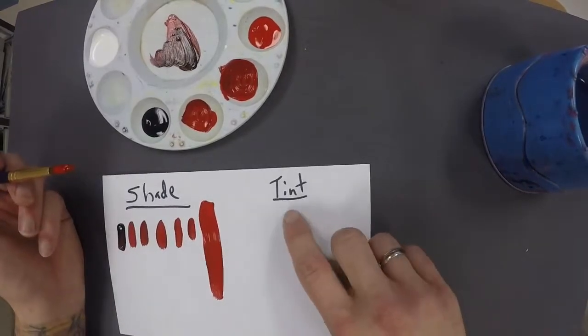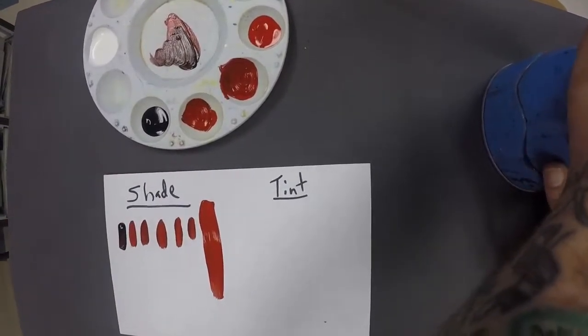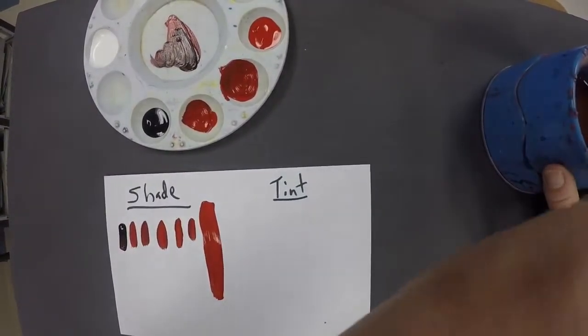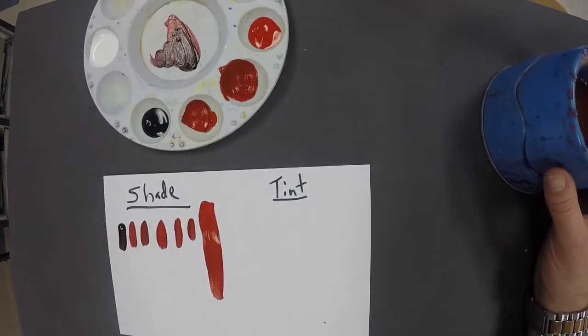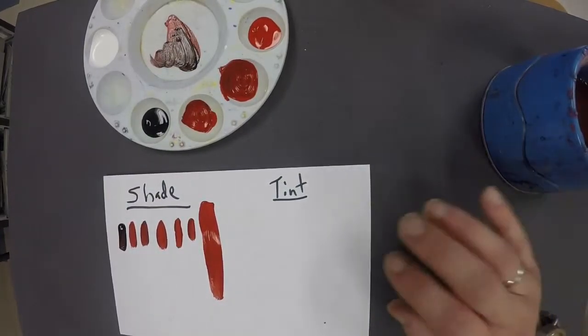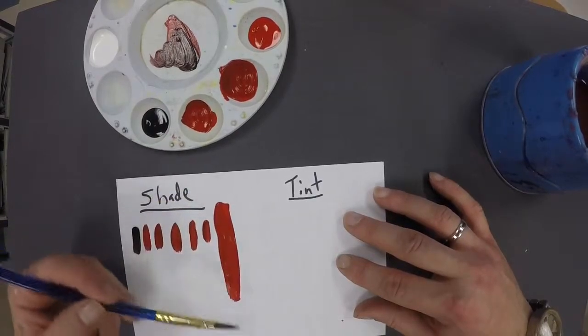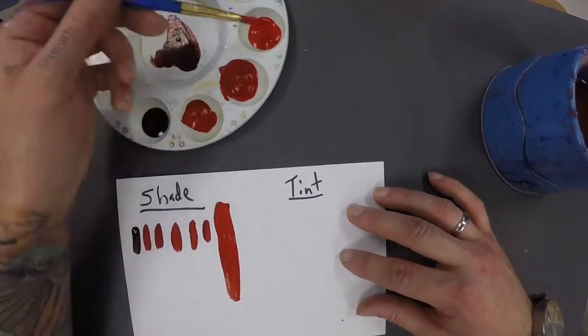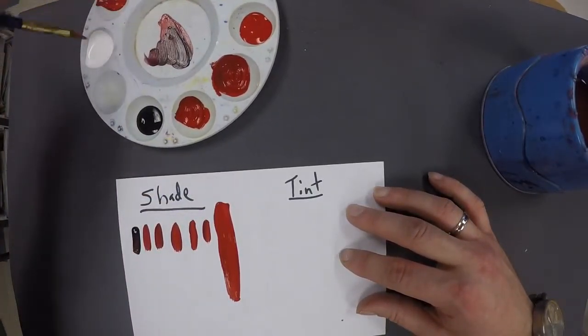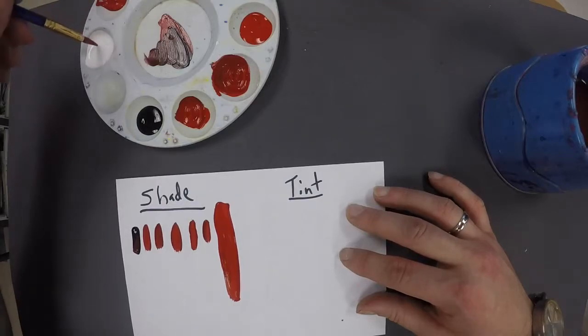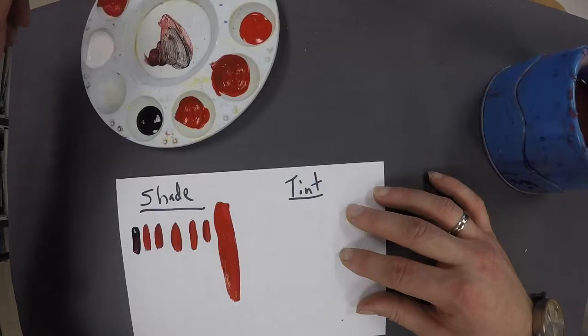Now on the other hand with a tint, we're doing the opposite. With a tint, we're adding small amounts or varying amounts of white to a color. So from our original color, again, working, adding small amounts at a time.